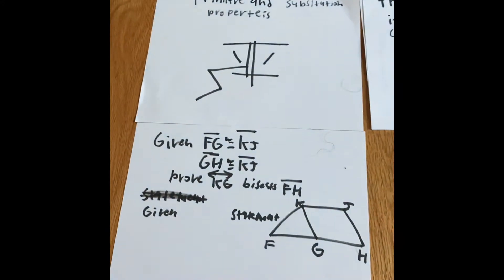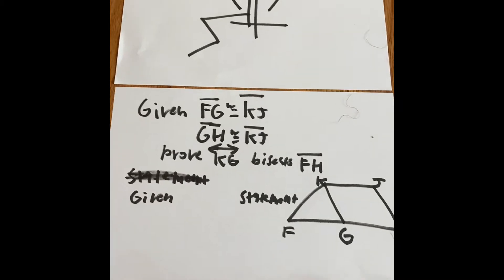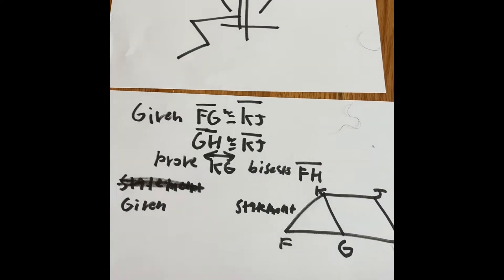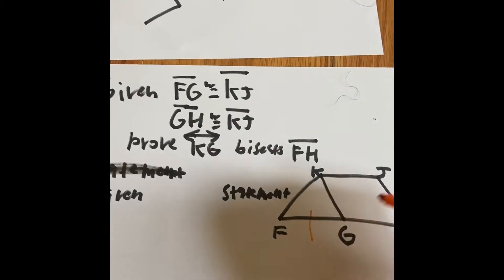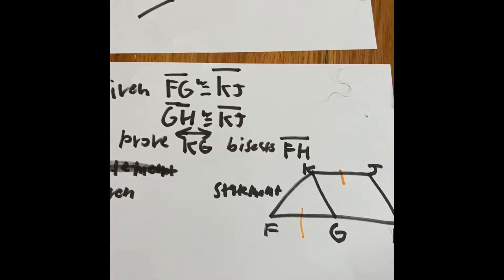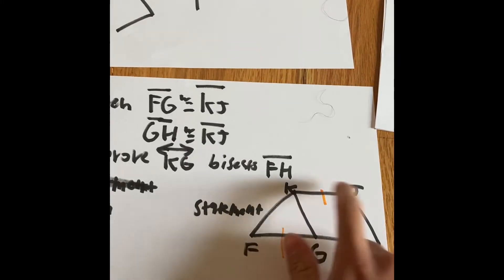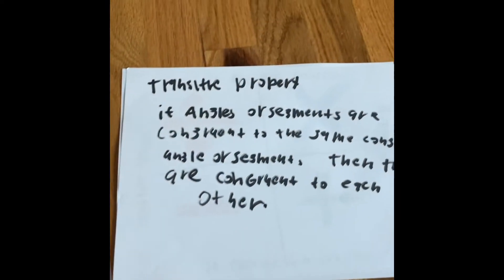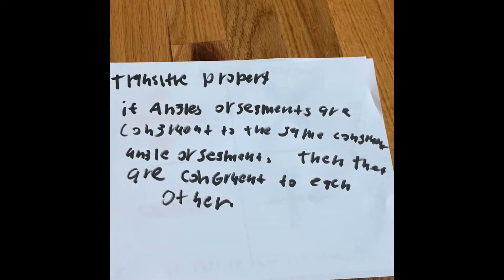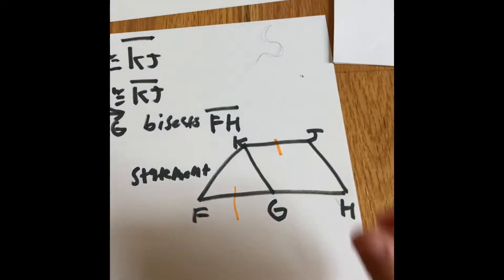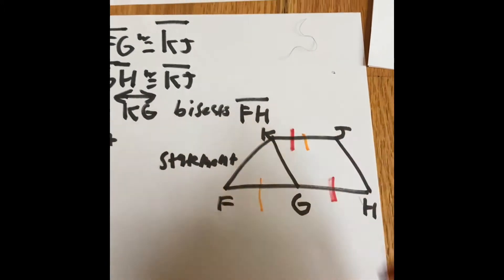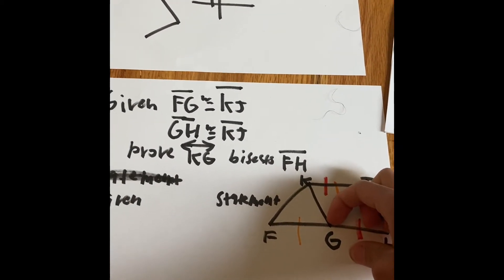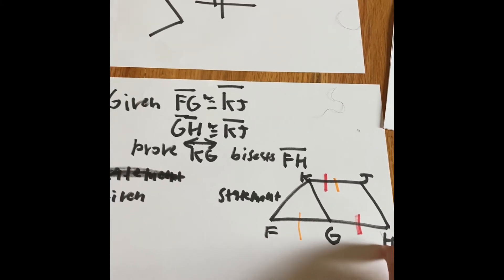Here's an example where we can see that in a proof. Given: FG and KJ are congruent, and GH and KJ are also congruent. You can see where this is going — angles or segments congruent to the same congruent angle or segment means they are congruent to each other. We have to prove that line KJ is an angle bisector and that it bisects FH.